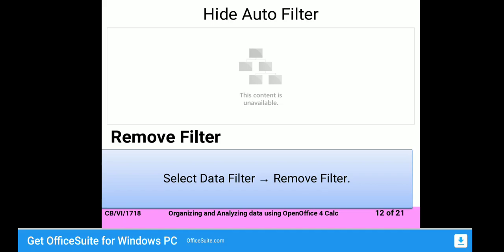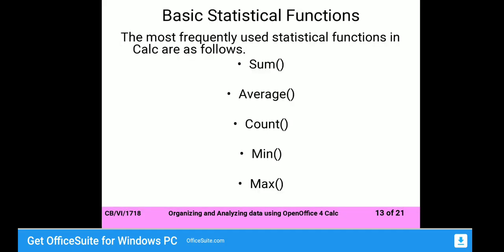Now we are going to study the basic statistical functions — the most frequently used statistical functions in Calc. These are: SUM, AVERAGE, COUNT, MIN, and MAX. In the previous class, we used the SUM function to sum particular cells or particular data.